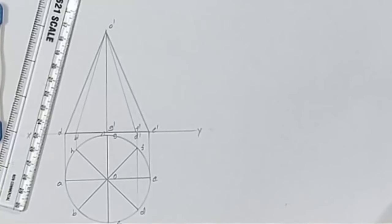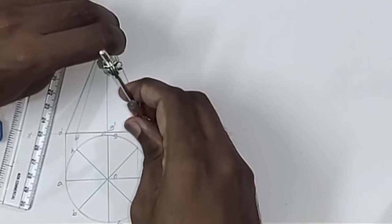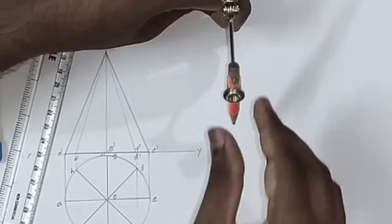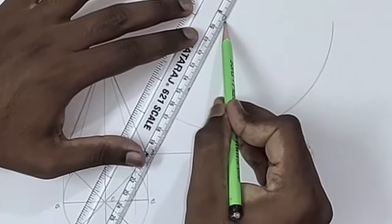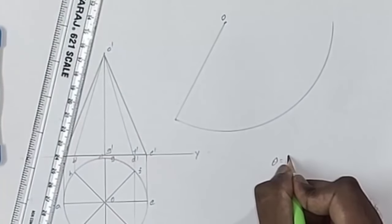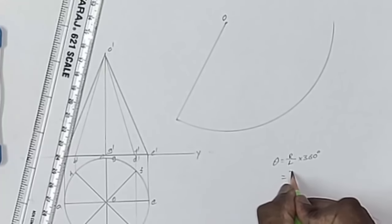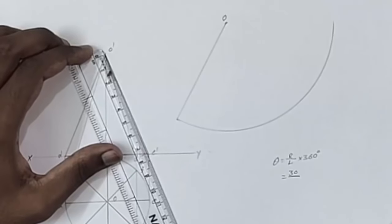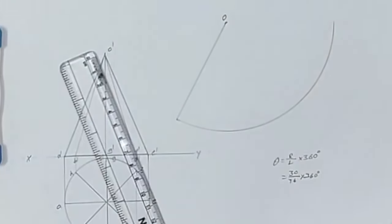The development of a cone will be a sector, and the sector will have a radius equal to its slant length. So let us measure the length and take any point O over here. From that O, draw a sector with an angle calculated by the formula: theta equals R divided by L multiplied by 360 degrees. R is the radius of the circle, that is 30, and L is the slant length of the cone — measuring that, it is 76 mm. So 30 by 76 into 360 degrees gives the angle of the sector, which comes to around 142 degrees.